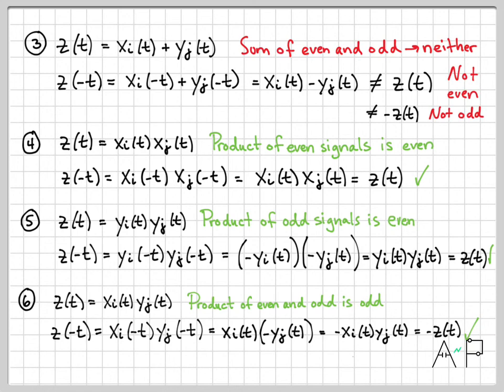We now have these facts to use as we work different problems and try to determine if a composite signal — comprised of sums, products, or combinations — has symmetry properties. That wraps up this small sequence on symmetry properties: even, odd, and conjugate symmetric. In the next video we'll move on to signal classification, discussing periodic and non-periodic signals for both continuous time and discrete time signals.